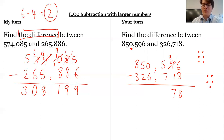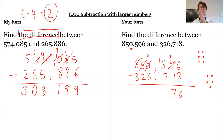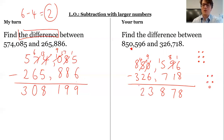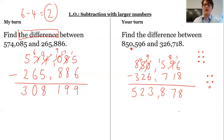No thousands, so I'll go to my 10 thousands. Regroup into 10 thousands, then take one of those thousands and turn it into 10 hundreds — it's like a shuffle; everything's shuffling along one place. 15 subtract 7 is 8. 9 subtract 6 is 3. 4 subtract 2 is 2. And 8 subtract 3 is 5. So I get 523,878.